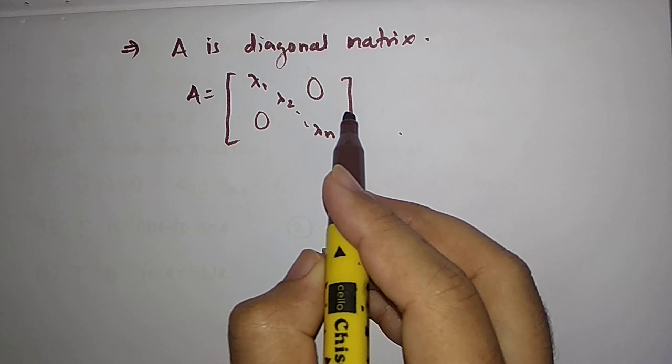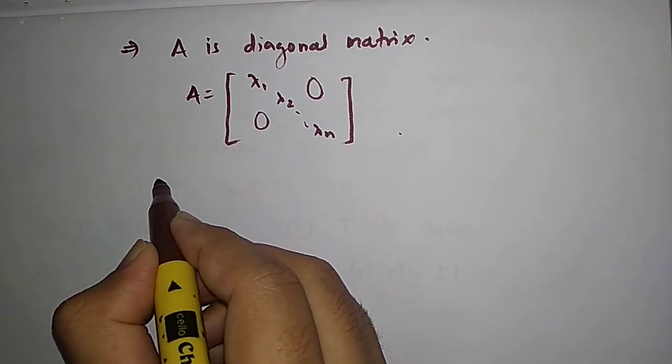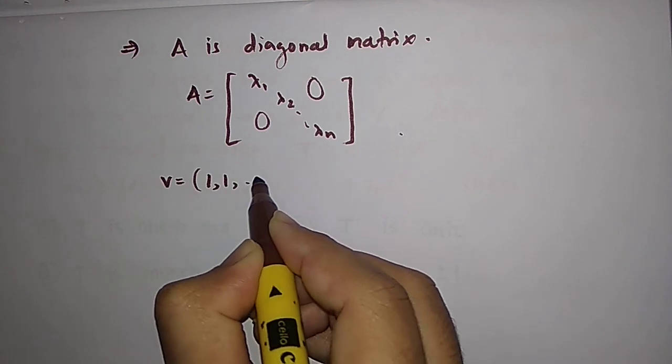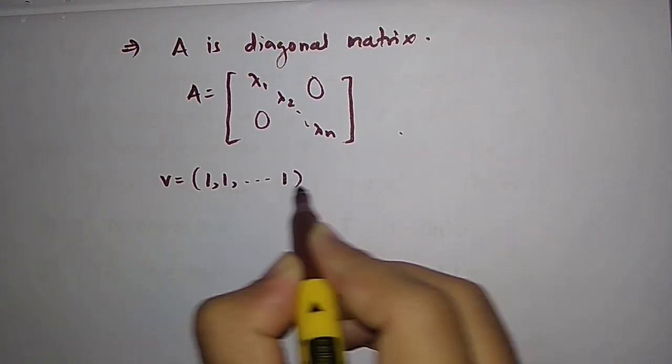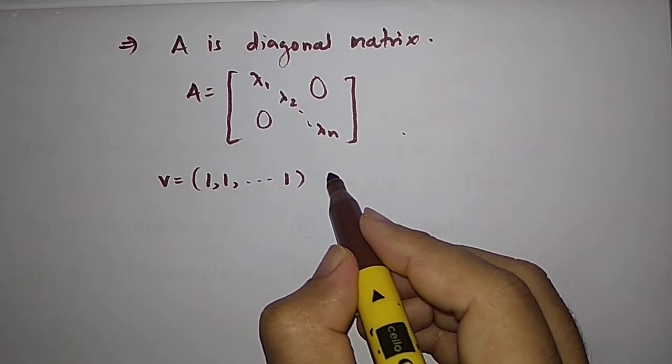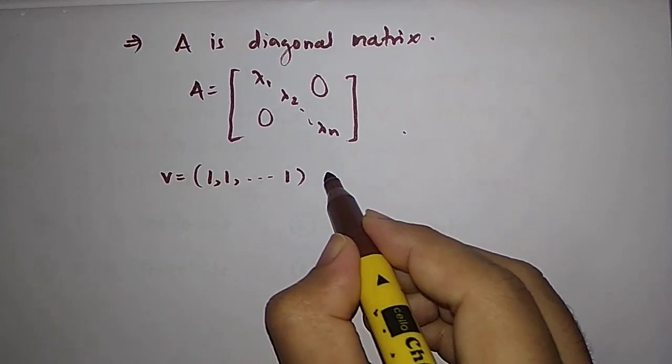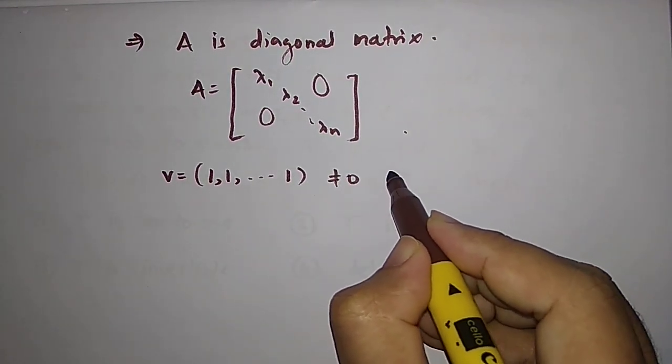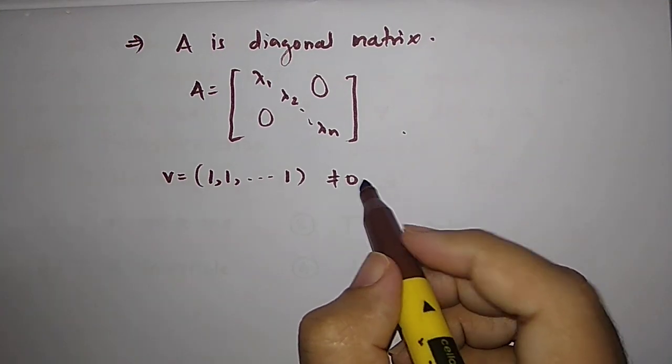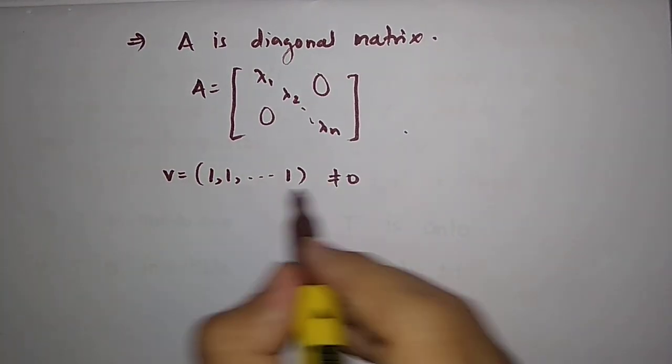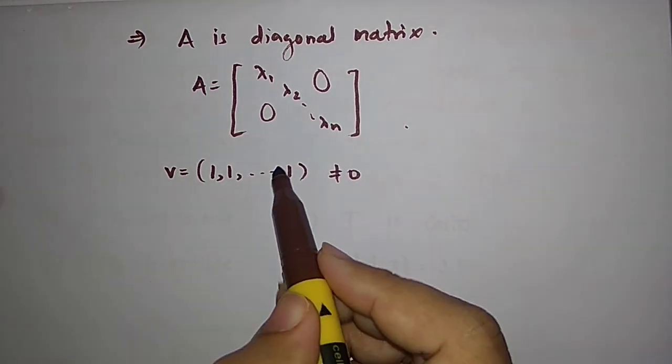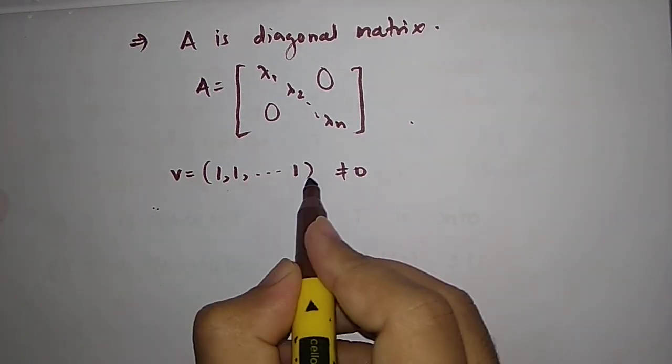It is also saying that this vector, the 1 at each coordinate, 1, 1, 1 up to 1. This is exactly the summation of all e_i's. This is also a non-zero vector of C^n and since every non-zero vector is an eigenvector, this is also an eigenvector. We have got A to be a diagonal matrix and this is also eigenvector.